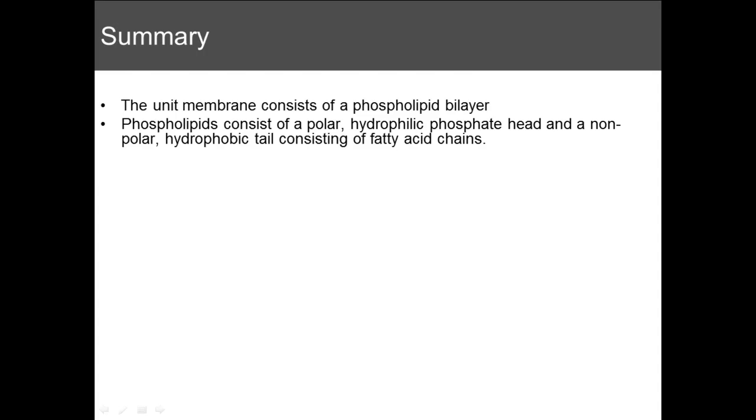In summary, a unit membrane consists of a phospholipid bilayer. Phospholipids are made of a polar hydrophilic phosphate head, meaning they like water, and a non-polar hydrophobic tail consisting of fatty acid chains. Hydrophobic means they do not like water and hence they are found away from any aqueous solutions.